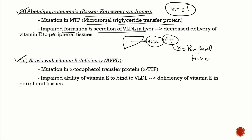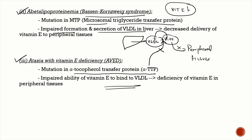The second rare genetic variant is ataxia with vitamin E deficiency (AVED), caused by a mutation in the alpha-tocopherol transfer protein. Since this protein is needed for vitamin E to bind to VLDL, its absence again causes vitamin E deficiency in peripheral tissues. These are the two important rare genetic variants of Friedreich's ataxia.